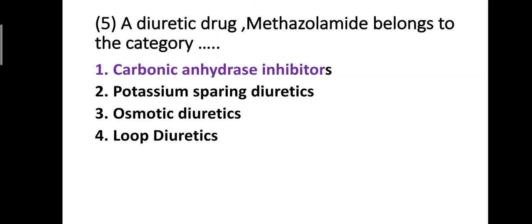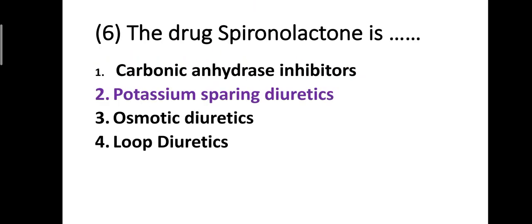Question number five: the diuretic drug methazolamide belongs to which category? Option one: carbonic anhydrase inhibitors, option two: potassium sparing diuretics, option three: osmotic diuretics, option four: loop diuretics. The correct answer is option one — methazolamide belongs to the category of carbonic anhydrase inhibitors.